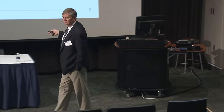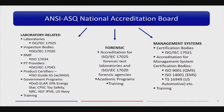An overview: ANAB — ANSI-ASQ National Accreditation Body. ASQ is part owner of ANAB. The lab-related area on the left is what most people think of when dealing with 17025 and 17020. But it also deals with forensics — crime scene labs, state crime labs, forensic capability — and with certification bodies.